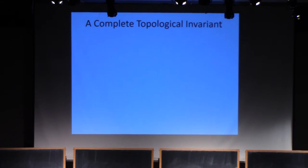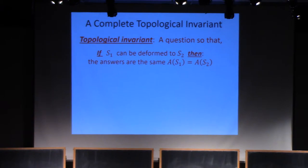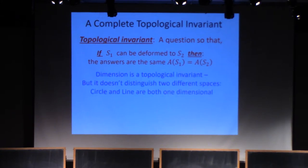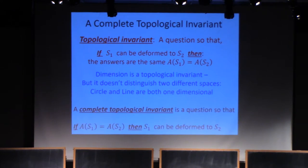That's a very good question. It's an example of a complete topological invariant. A topological invariant is a question so that if S1 can be deformed to S2, then the answers are the same. Dimension is a topological invariant, but it's not a complete topological invariant because the circle and the line are both one-dimensional yet they're topologically distinct. A complete topological invariant is a question so that if the answers are the same, then S1 can be deformed into S2.